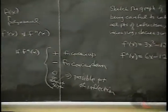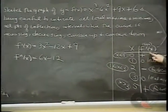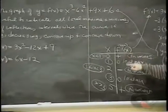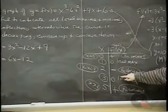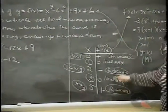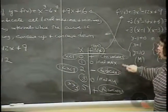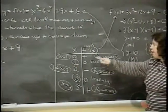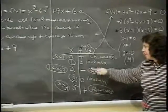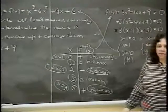Just like for the first derivative, a sign change is necessary. If the first derivative changes from plus to minus, it's a max; from minus to plus, it's a min. In the second derivative chart, any sign change — plus to minus or minus to plus — indicates a point of inflection.